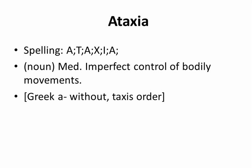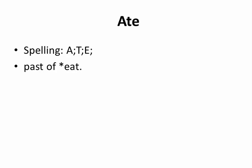Ataxia. Spelling: A-T-A-X-I-A. Noun. Medical: imperfect control of bodily movements. From Greek 'a' (without) + 'taxis' (order).